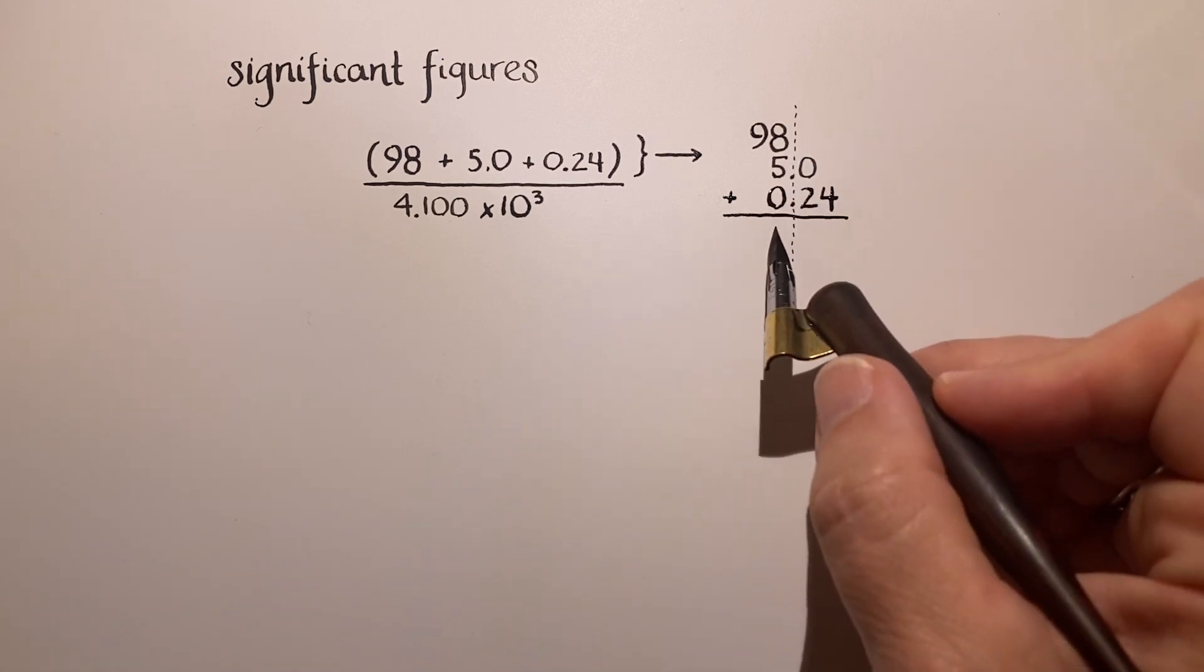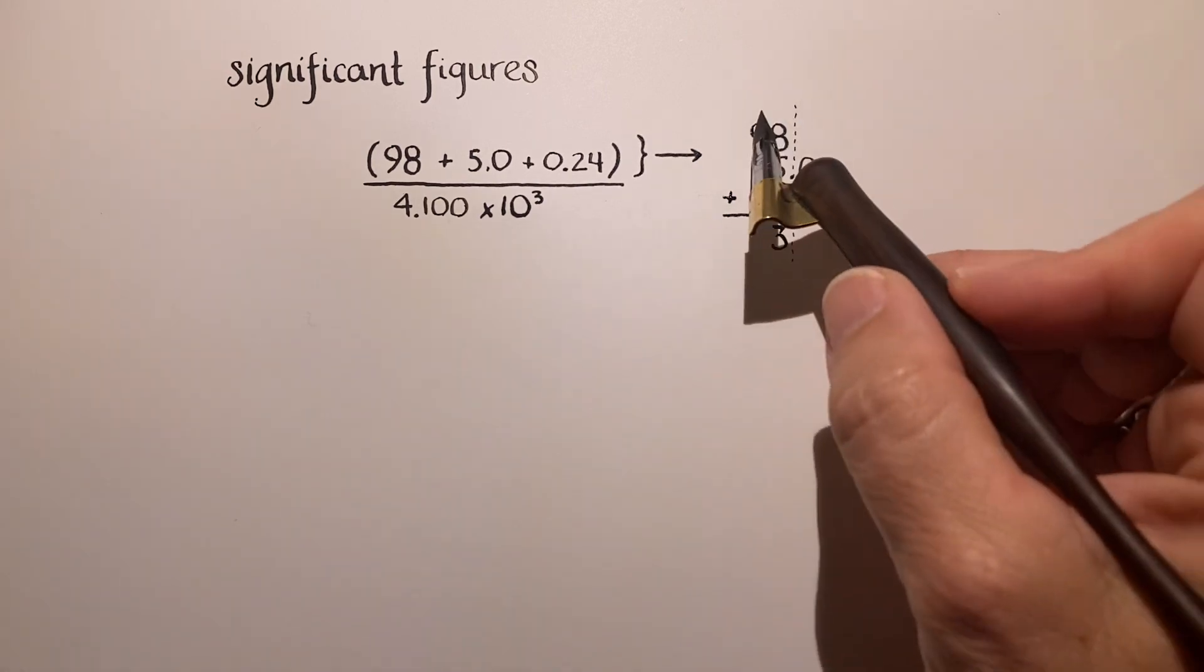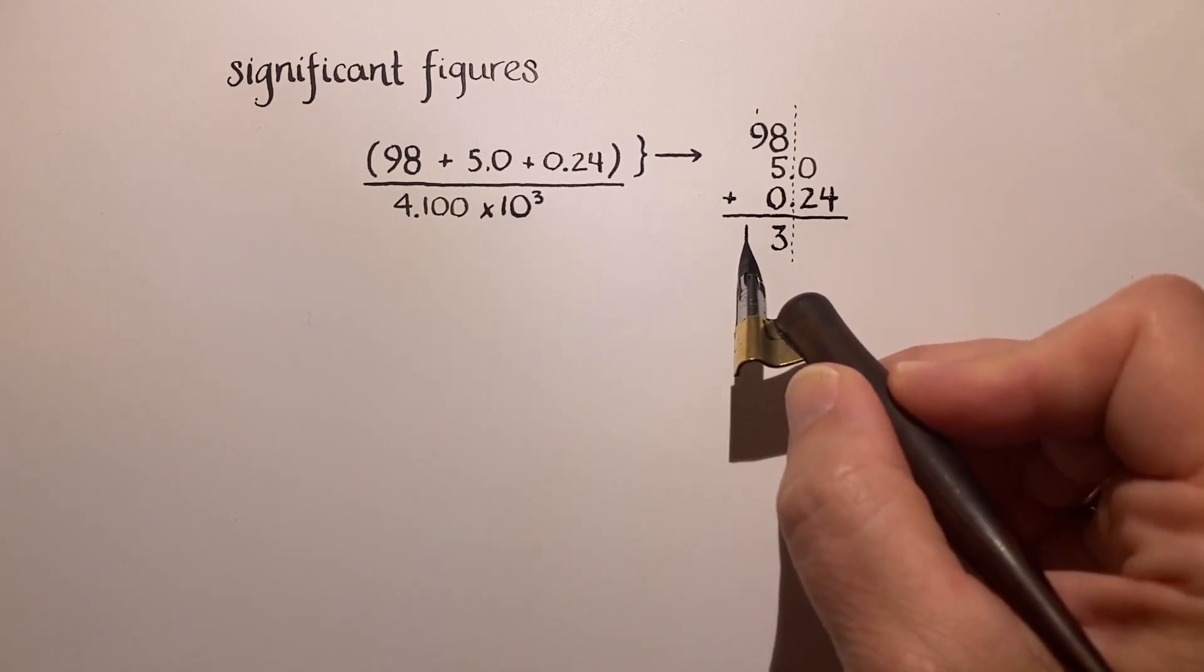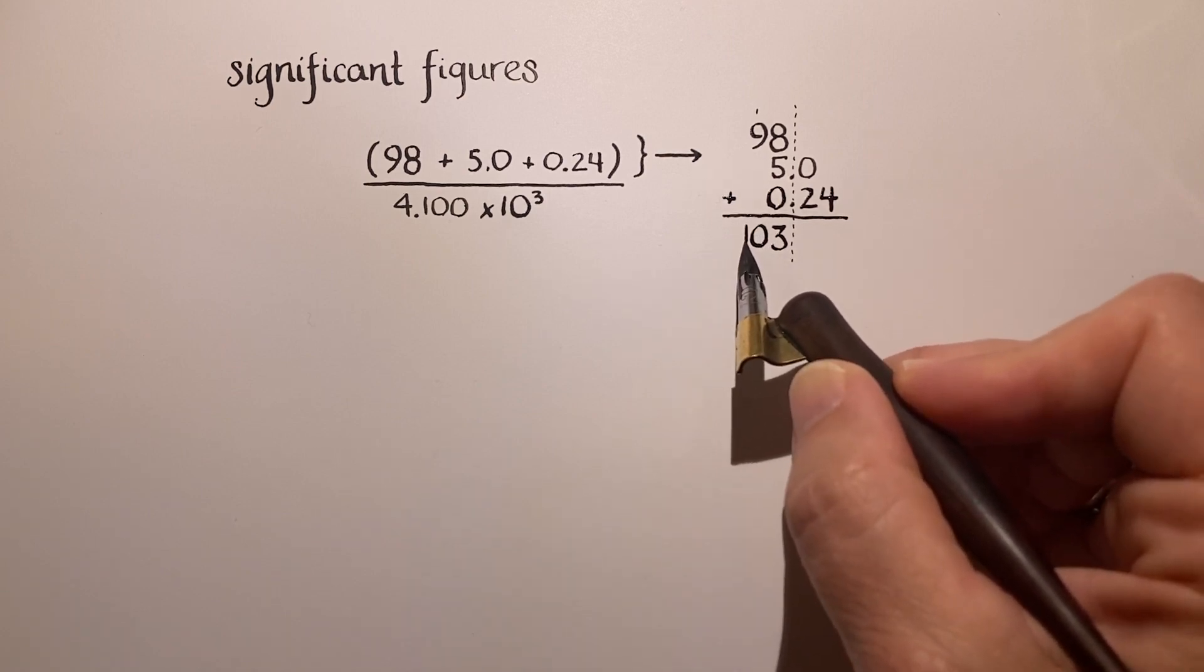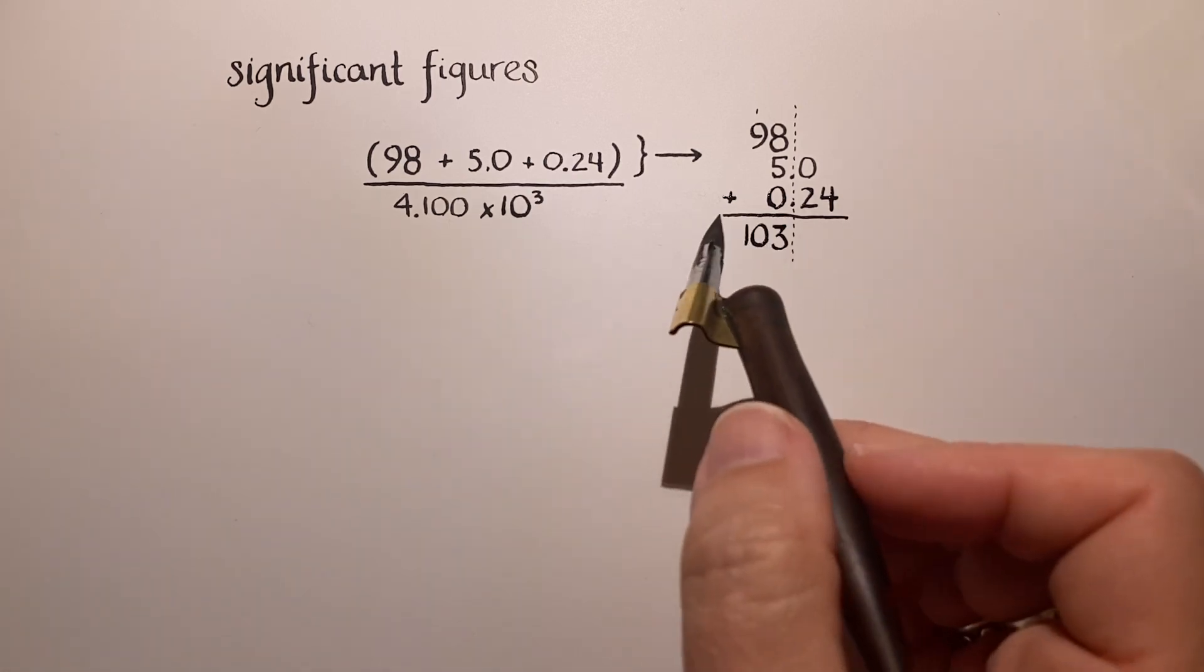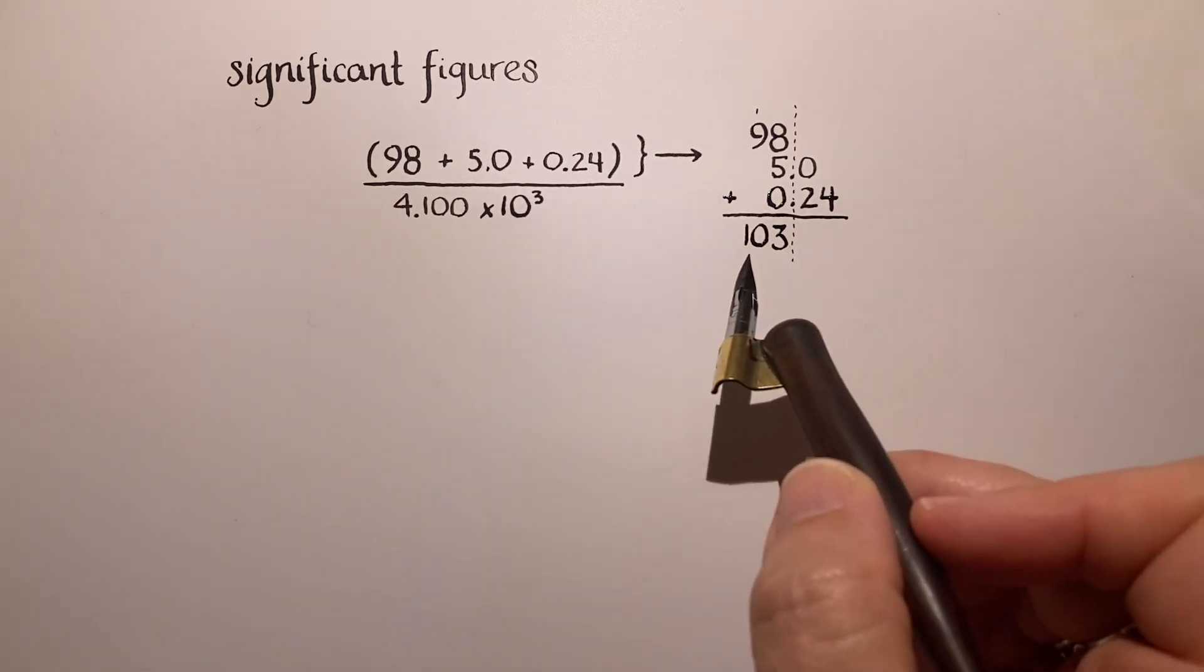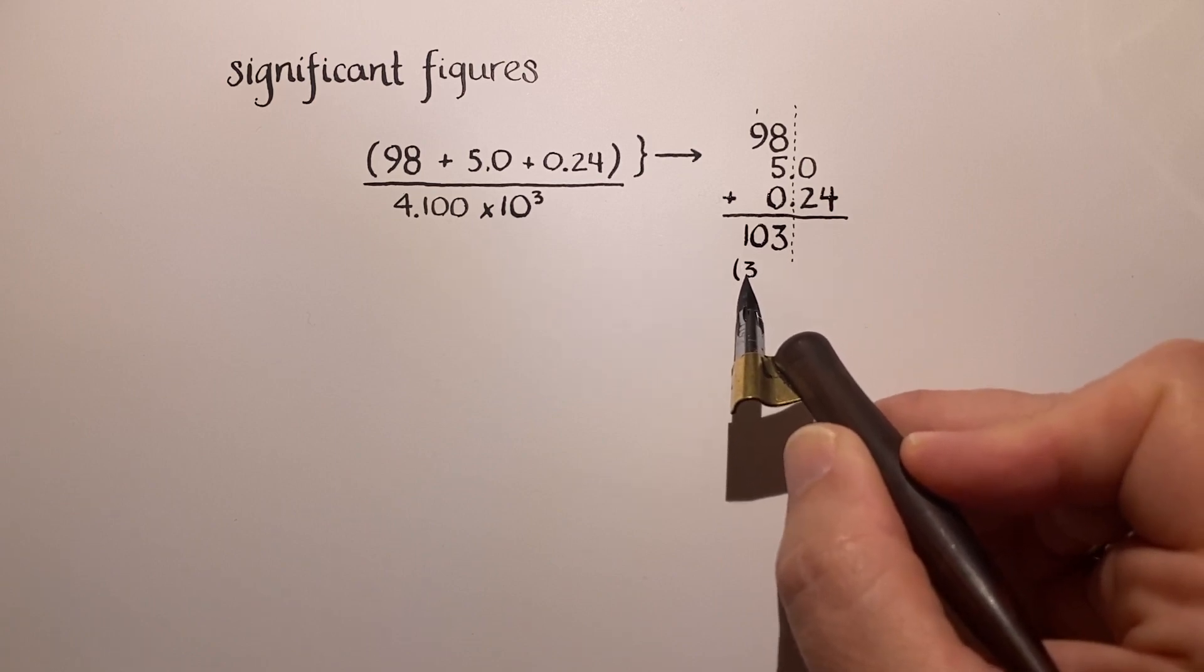Okay, so 8 and 5, we get 13. You can of course put this into your calculator, but we're just going to do this by hand. Alright, 9 plus 1 is 10, that's in the hundredths place. So we end up with a result of 103, nothing else, nothing past here. Okay, so this is the result from adding these three together, and this number has three significant figures.